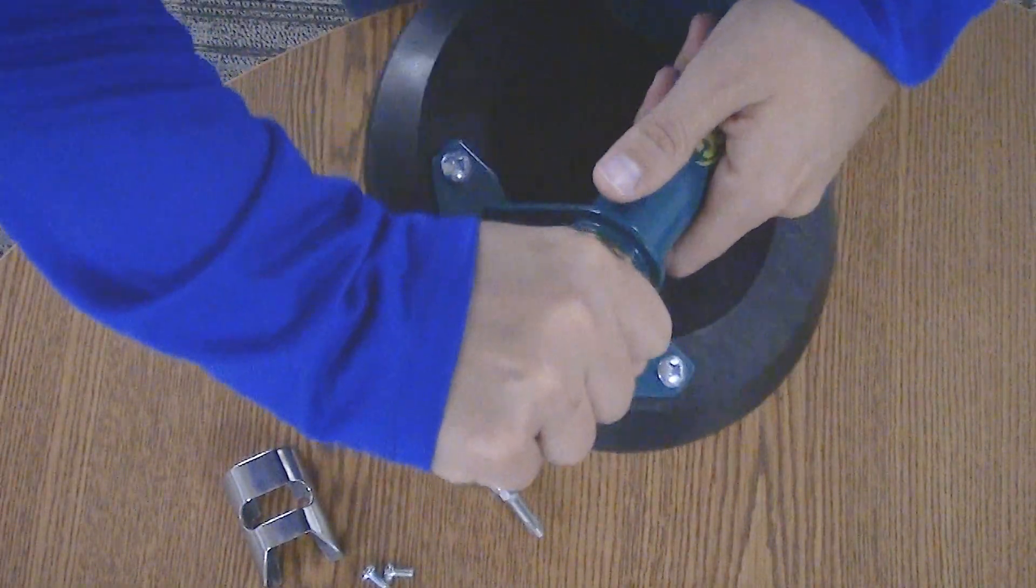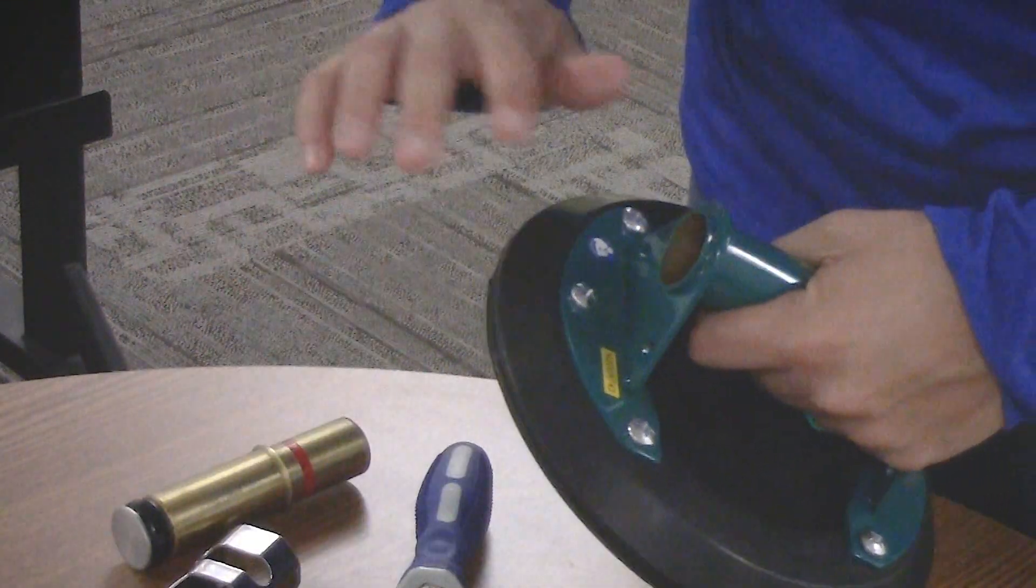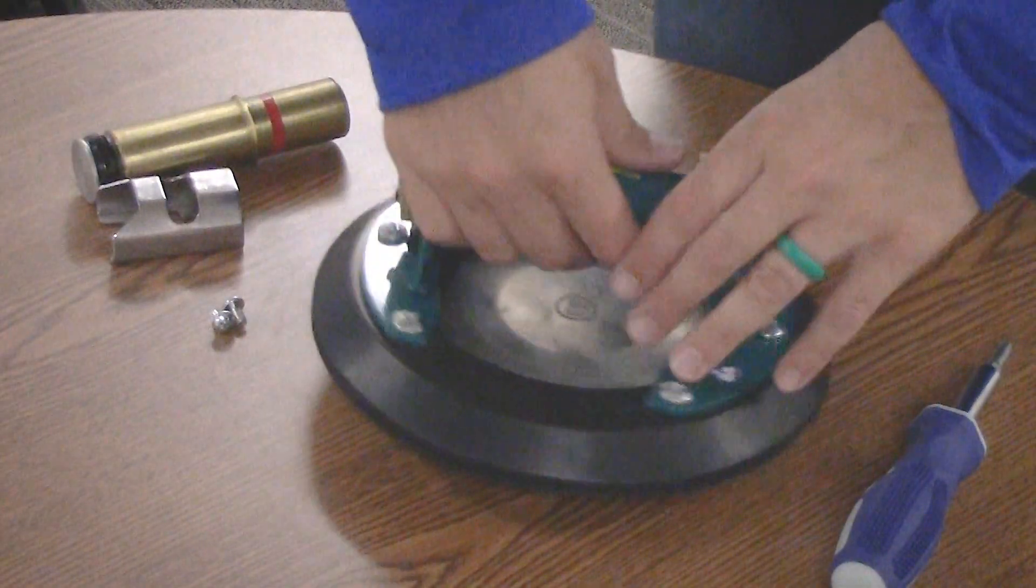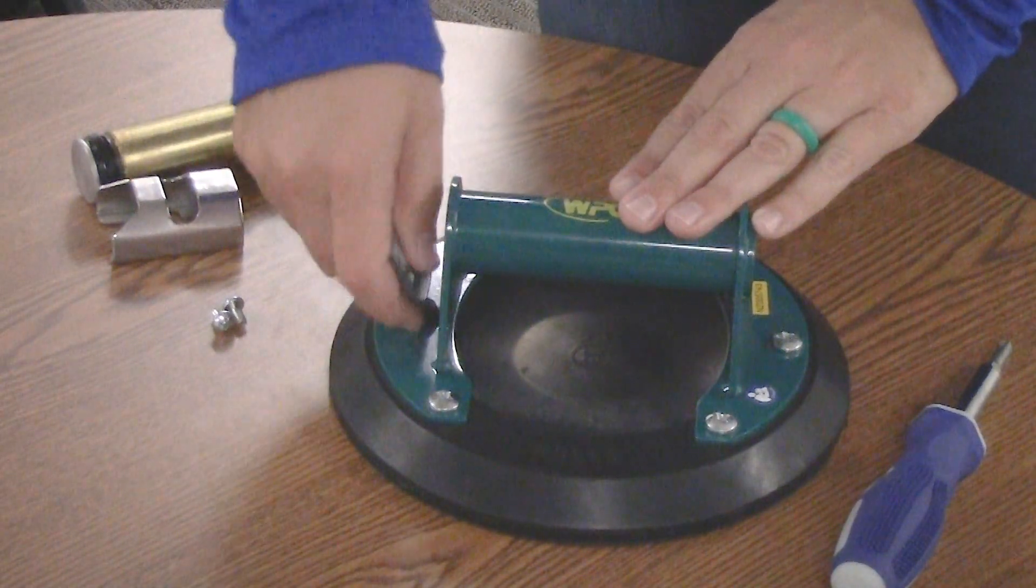Then remove the plunger to gain access to the pad screw underneath of it. Now all six of the pad screws should be accessible.